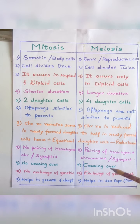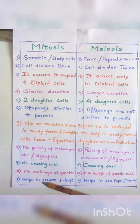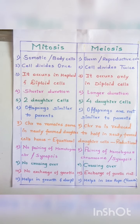In mitosis there is no exchange of genetic material, whereas in meiosis exchange of genetic material takes place during crossing over. Mitosis helps in growth and development of the organism, whereas meiosis helps in development of gametes during the process of sexual reproduction.